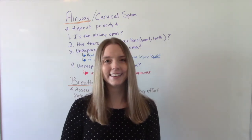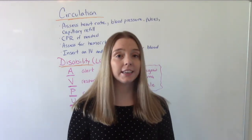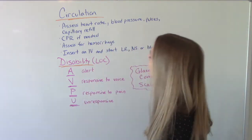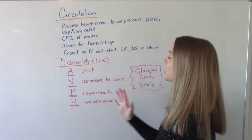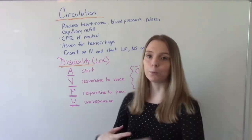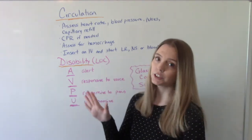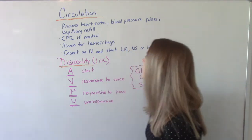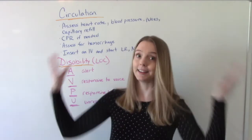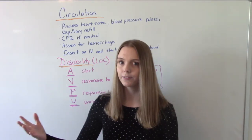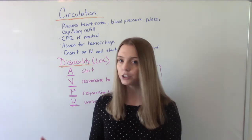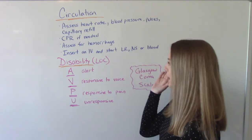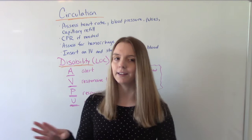C stands for circulation. After checking airway and breathing, assess the patient's heart rate, blood pressure, peripheral pulses, and cap refill. If chest compressions are needed, this is when we start CPR. We also assess for hemorrhage — if the patient is bleeding significantly, we need to rule that out. Once we get the order, we'll insert an IV and start lactated Ringer's, normal saline, or blood, depending on what's going on with the patient.